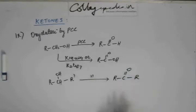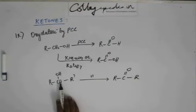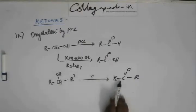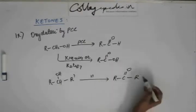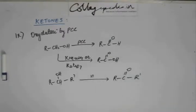Because there are R groups on both sides of C double bond O. So basically a hydrogen from here and a hydrogen from here will come out and there will be a C double bond O formation and there is a R group on both sides. So this gives us a ketone.